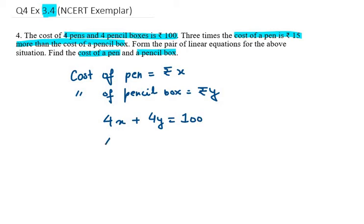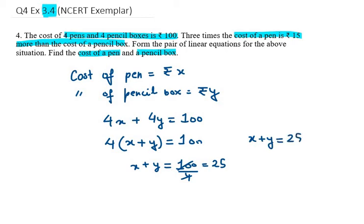Now we can actually minimize this equation. What you need to do is take four common from the left hand side, so it will be 4 in bracket (x + y) equals 100. Now it will be x + y equals 100 over 4. 100 over 4 is 25, so my first equation is x + y equals 25.